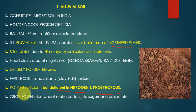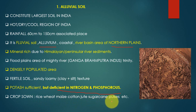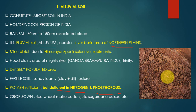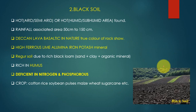Crops grown in alluvial soil include rice, wheat, maize, cotton, jute, sugarcane, pulses, etc. To summarize, alluvial soil is formed by river erosion and deposition — a combination of sand, silt, and silica. This is alluvial soil.